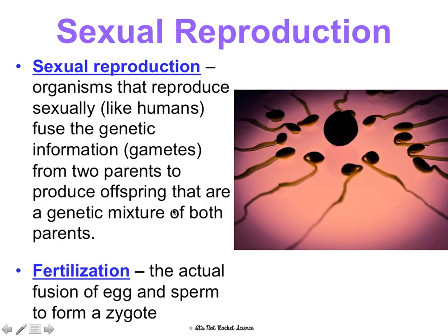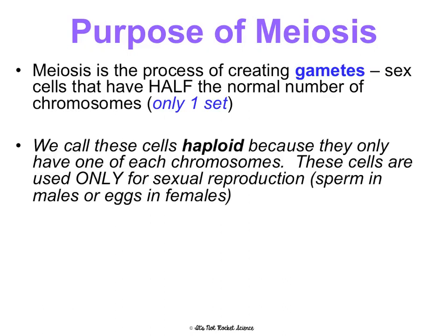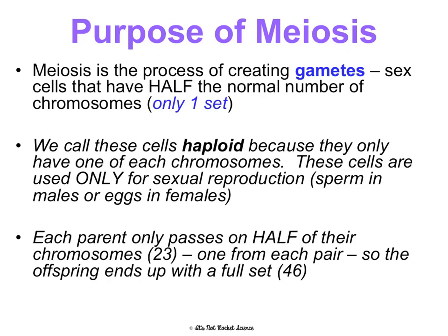We're learning how that egg and sperm get formed, and it's so important that they have half the amount of chromosomes so that two halves will make the whole set that we need. The purpose of meiosis is to create gametes — sex cells that have half the normal number of chromosomes. The normal number is two sets, so in meiosis we're creating cells that have one set. We call these haploid because they only have one of each type of homologous chromosome. They're only used for sexual reproduction — sperm in males, egg in females. Each parent's only going to pass on half of their chromosomes, one from each of their pairs, so their offspring will end up with a full set of 46.